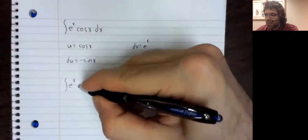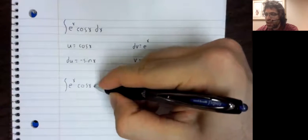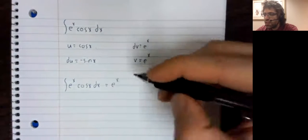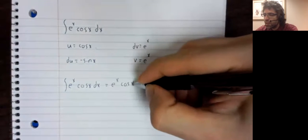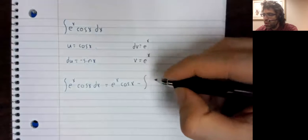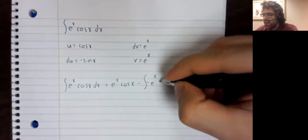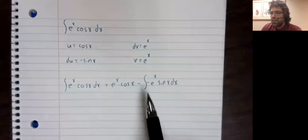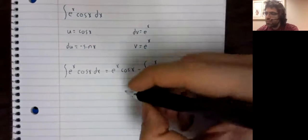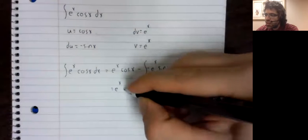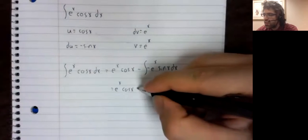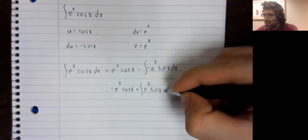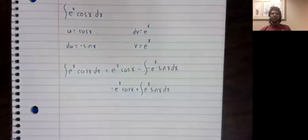And we get that e to the x times the cosine of x dx equals u times v minus the integral of v du. Take this negative sign, pull it out. E to the x times the cosine of x. Thus, the integral of e to the x times the sine of x.